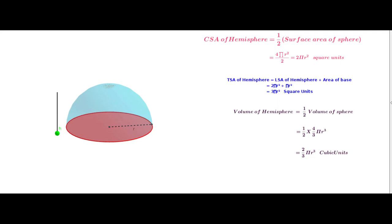Therefore, the total surface area of the hemisphere equals the lateral surface area plus the area of the base, that is 2πr² + πr², which equals 3πr² square units. The volume of the hemisphere is equal to half the volume of a sphere, that is (1/2) × (4/3)πr³, which equals (2/3)πr³ cubic units.